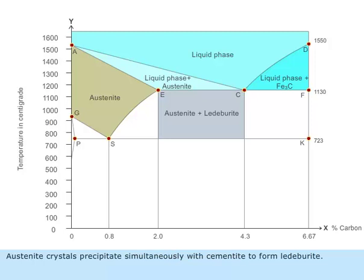Austenite crystals precipitate simultaneously with cementite to form ledeburite. These cast irons will consist of primary austenite and ledeburite crystals.